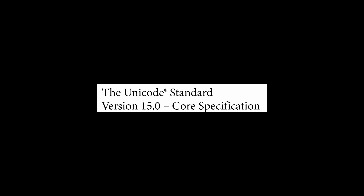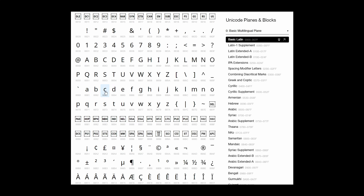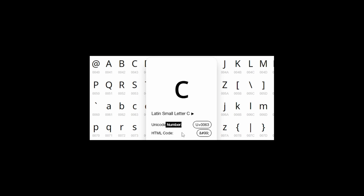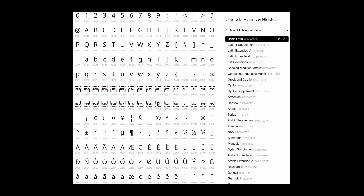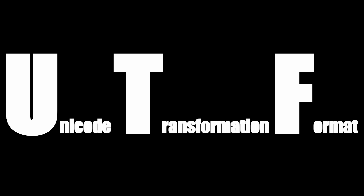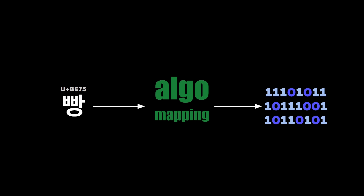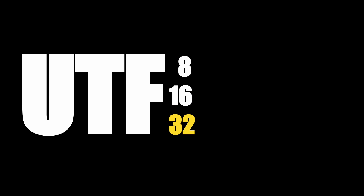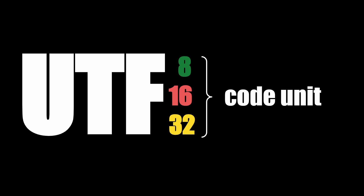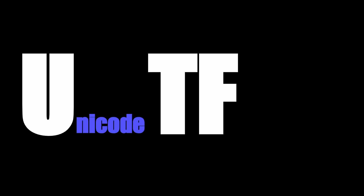Unicode is just a standard. It defines the characters and gives them a number, but it does not define how the number should be encoded in binary format. To do that, we usually use UTF, which stands for Unicode Transformation Format. It gives an algorithmic mapping from every Unicode code point to a unique byte sequence. The most famous ones are UTF-8, 16, and 32. The number following UTF is the code unit — the minimum amount of bits used to encode one character.